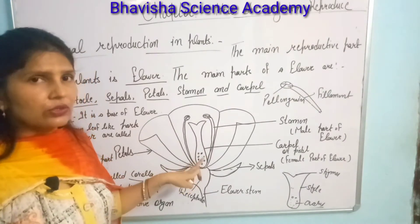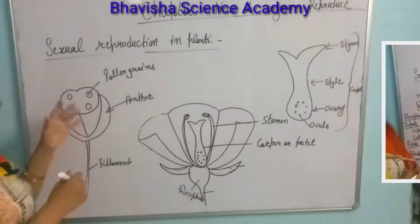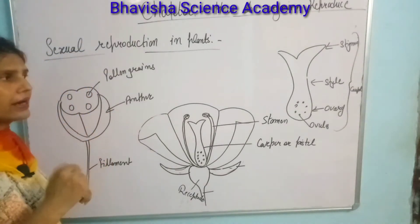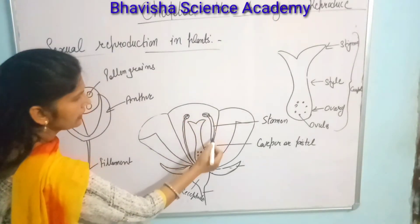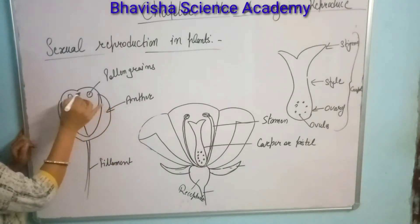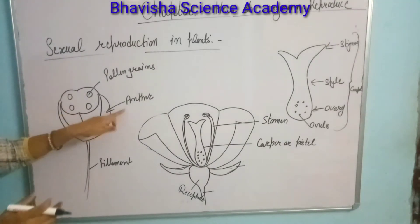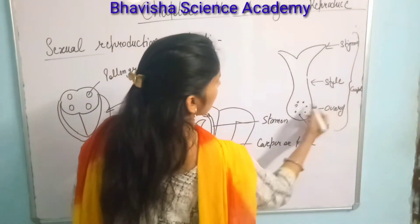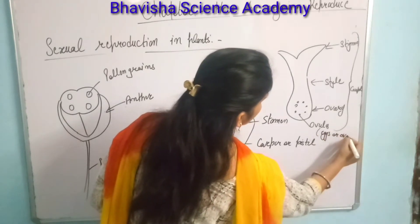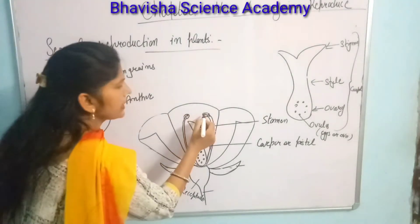That is the structure of a flower and how reproduction can occur in plants. The flower contains both the male part and the female part. The male part — the anther and filament — stores pollen grains inside the anther. The carpel has the stigma, style, and ovary, which contains small ovules (ova). The most important thing here are the pollen grains.